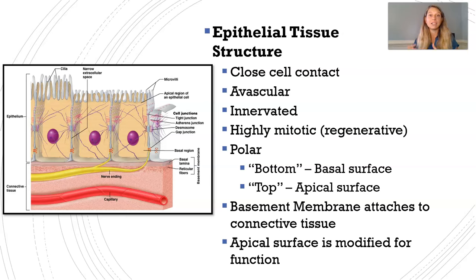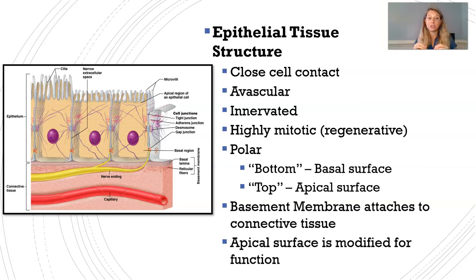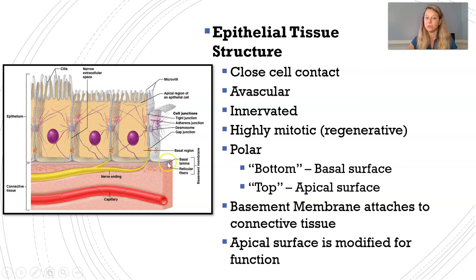There is a bottom and a top to an epithelial cell, so we call it a polar cell. The bottom surface where it's attached to the connective tissue is called the basal surface or basal region. The top, which is typically modified for wherever it is in the body, is called the apical surface. The basement membrane is what attaches the cell to the connective tissue. The apical surface is modified for functions — for example, this one has microvilli, which are great for absorbing nutrients.